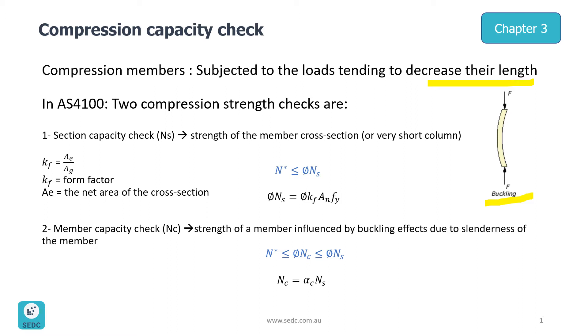In AS4100 there are two compression strength checks required. The first one is section capacity check and the second one is member capacity check.